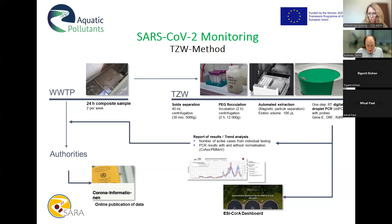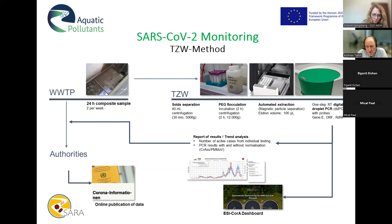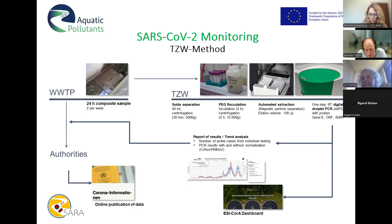This is the more detailed method we apply in our institute. Wastewater samples are taken from the influent of the treatment plant here in Karlsruhe. We do centrifugation to separate the solids, followed by polyethylene glycol flocculation. The extraction is done automatically, and then we do a one-step digital droplet PCR focusing on three different genes so we have reliable, concordant data.